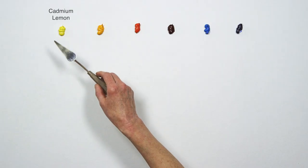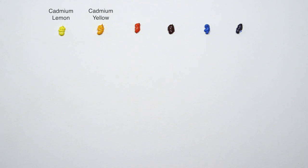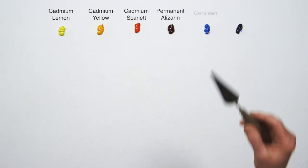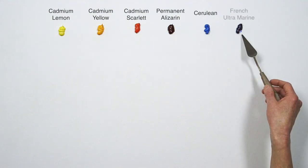I'll be using a palette that contains a warm and cool of each of the primary colors. My yellows are Cadmium Lemon and Cadmium Yellow. The reds are Cadmium Scarlet and Permanent Alizarin Crimson, and my blues are Cerulean and French Ultramarine.